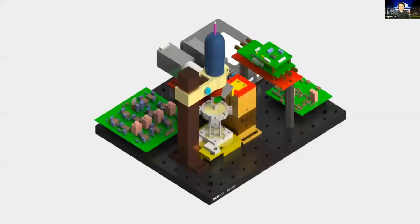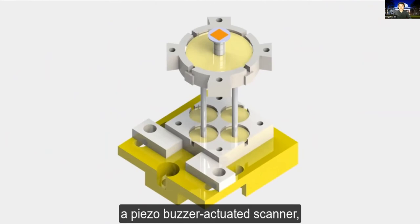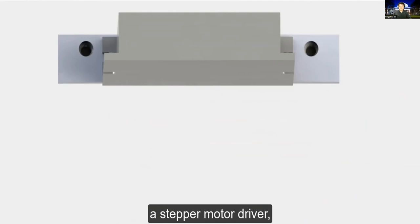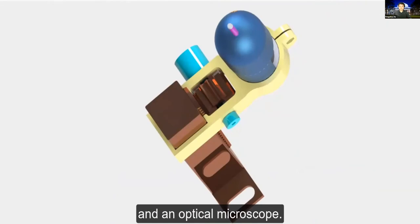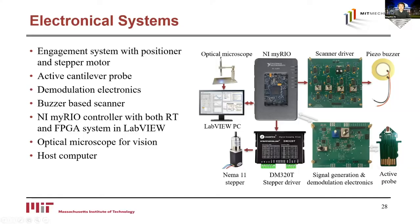The educational atomic force microscope design has nine primary subsystems: a piezo buzzer-actuated scanner, an active cantilever probe, a Wheatstone bridge amplifier, a signal generator and demodulator circuit, a National Instruments MyRIO, a stepper motor driver, a coarse positioner engagement system, a buzzer scanner driver circuit, and an optical microscope. The design is modular, low cost, easy to operate, and suitable for a variety of experiments. The AFM can be used as a platform for precision instrumentation education. The electrical subsystems include the engagement system with positioner and stepper motor, active cantilever probe, modulation electronics, buzzer-based scanner, MyRIO controller, and optical microscope for vision with a host PC.